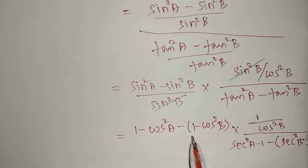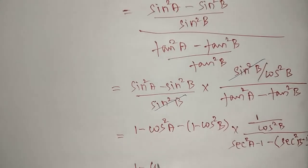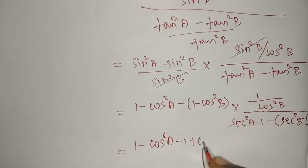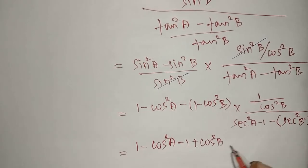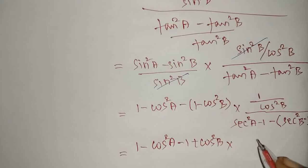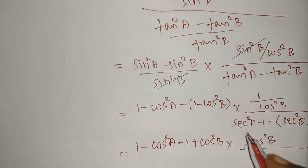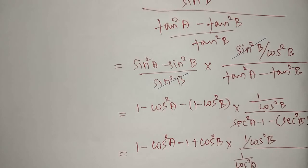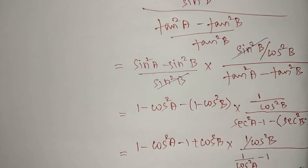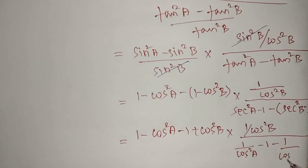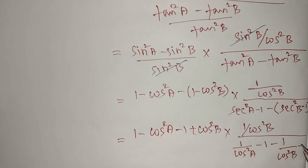Now simplify: (1 - cos²A) minus (1 - cos²B). Multiplying the minus inside gives: 1 - cos²A - 1 + cos²B. In the denominator, (sec²A - 1) minus (sec²B - 1) — multiplying minus inside gives sec²A - 1 - sec²B + 1. Writing sec² as 1/cos², we get 1/cos²A and 1/cos²B.